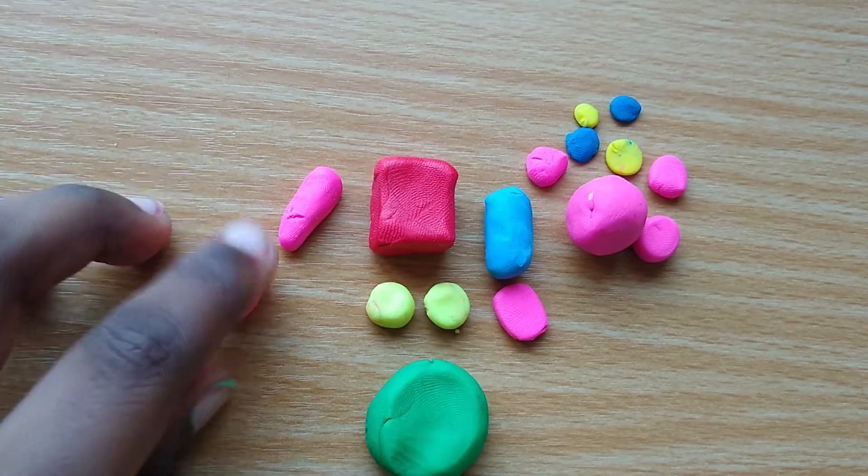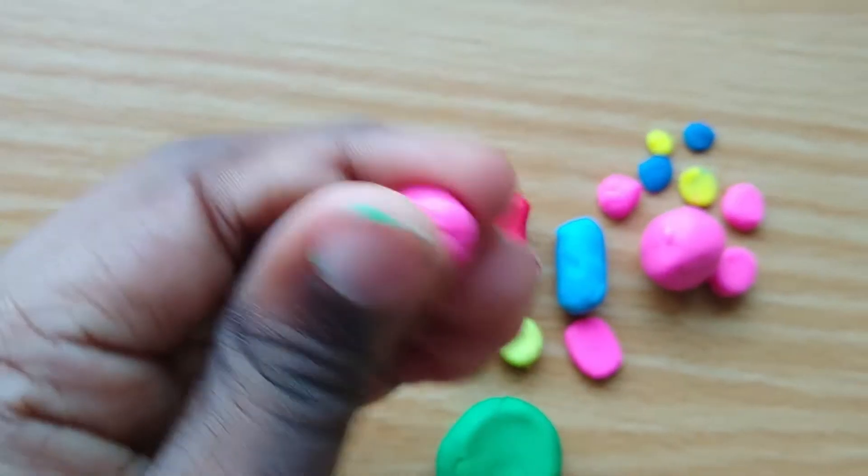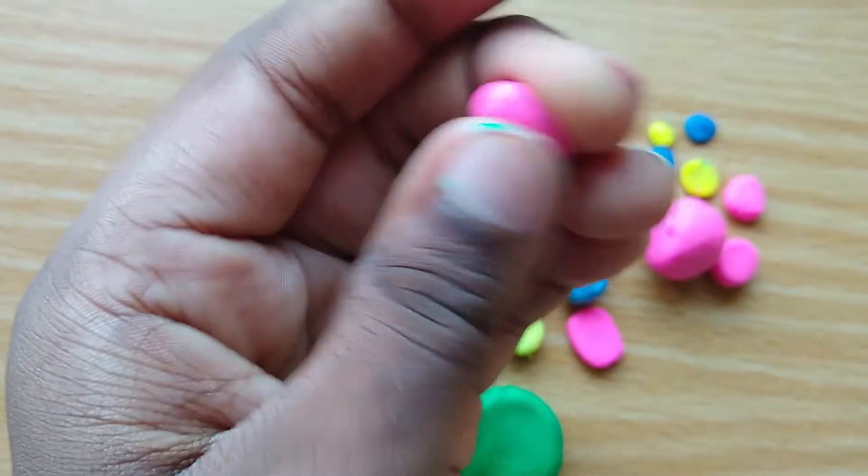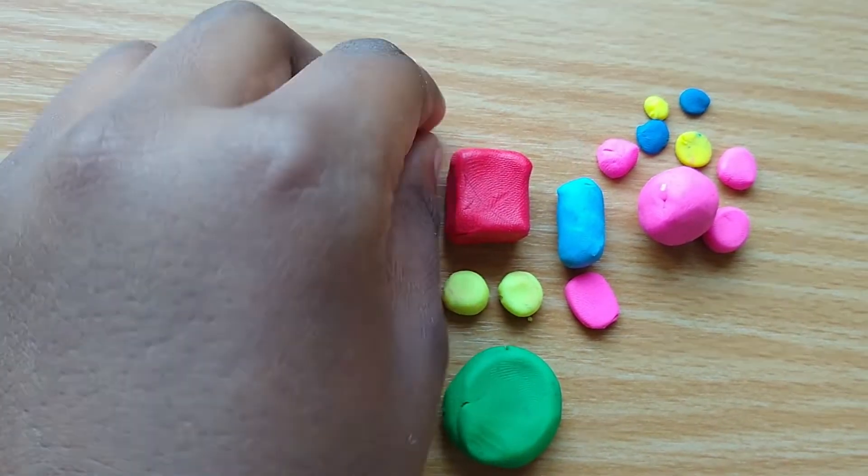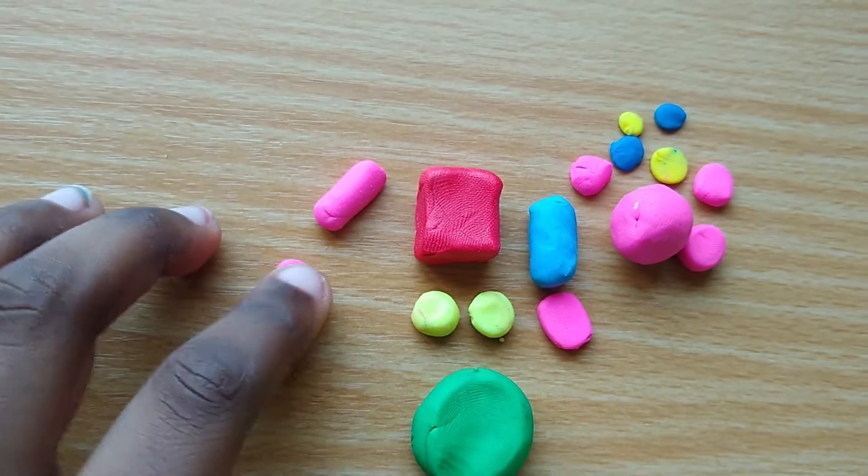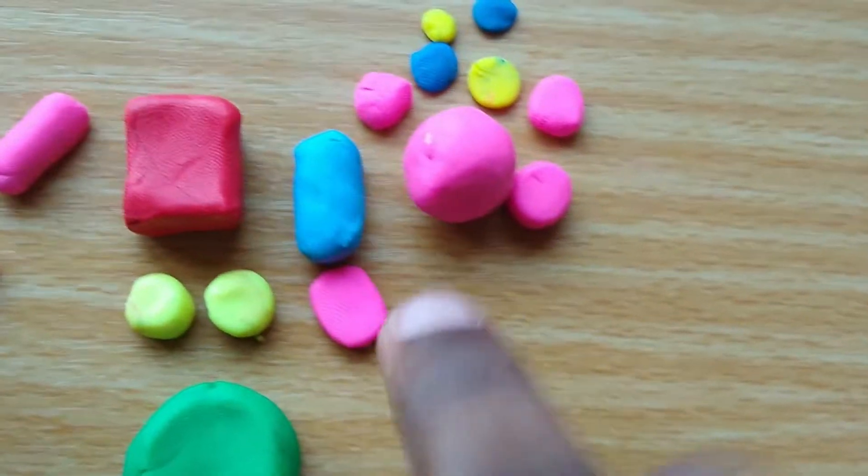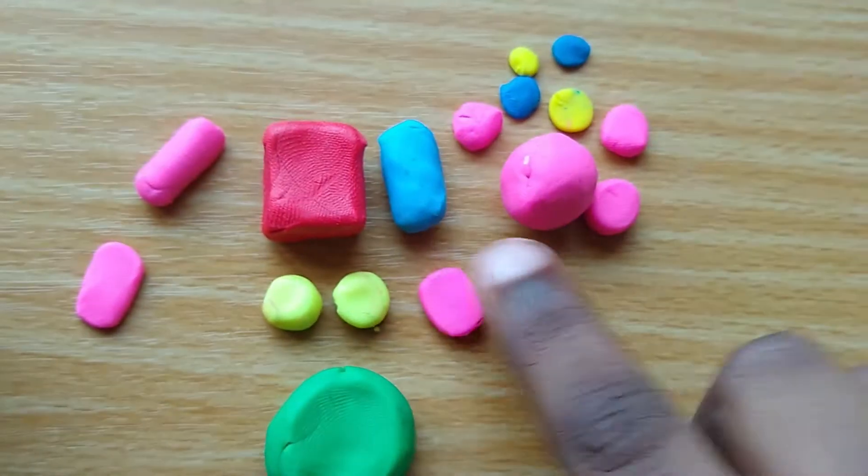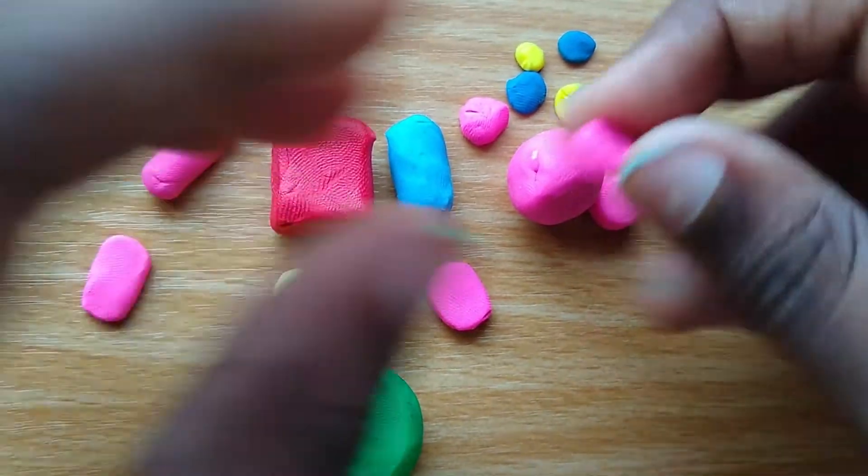Then you take another circle and roll it for a part of his arm because it's ripped, his shirt. Then you flatten it. Then you make a blue one for his fixed arm and do the same thing.